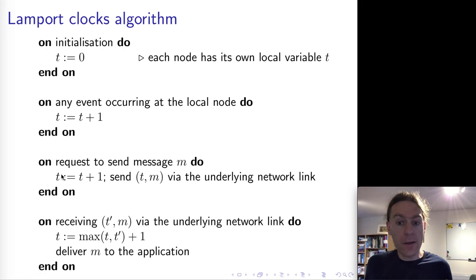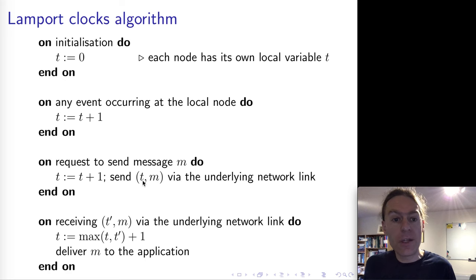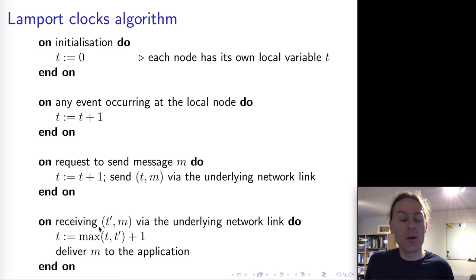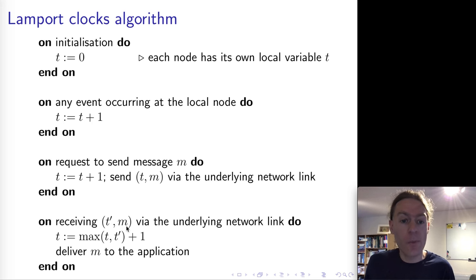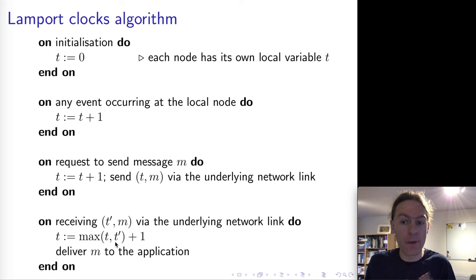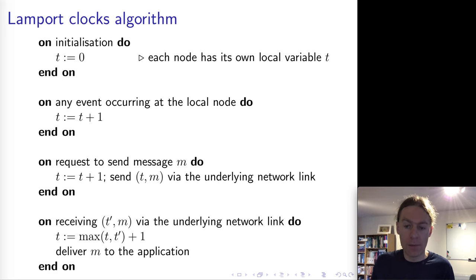Every time we want to send a message over the network, we increment t as usual for any local event, and we also attach the value of t to the message. So the message sent is a pair of a timestamp and the actual message. When one of these pairs is received at the other end, the receiving node takes the timestamp t' out of the message, looks at its own local variable t, and updates t to be the maximum of its own timestamp or the message's timestamp, plus one. After this, we deliver the message to the application.